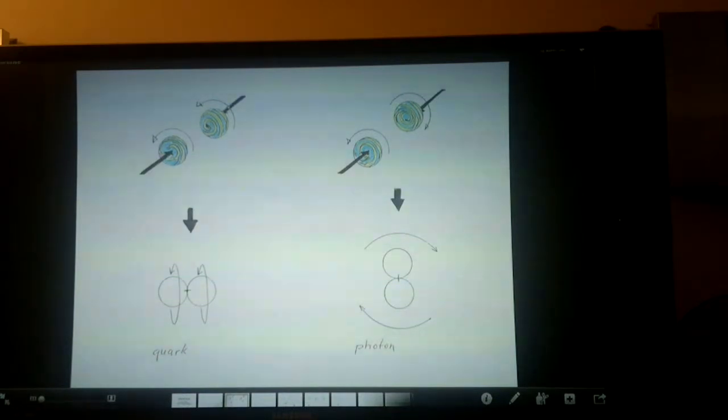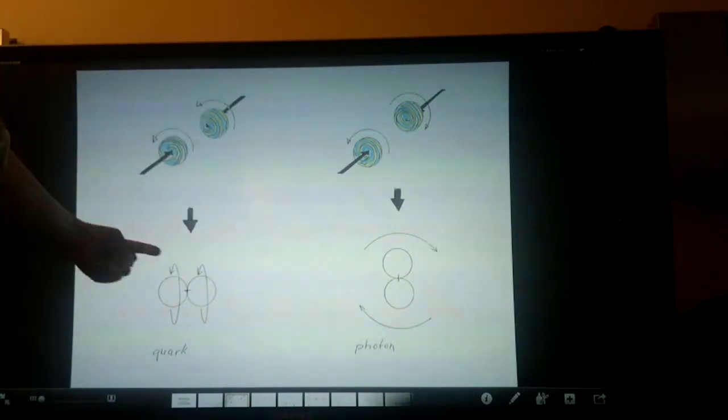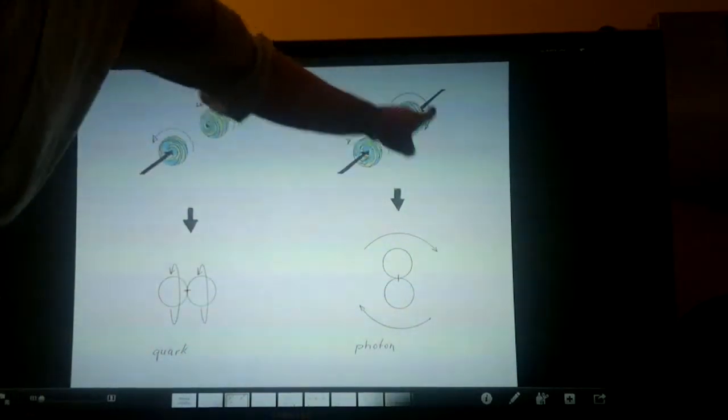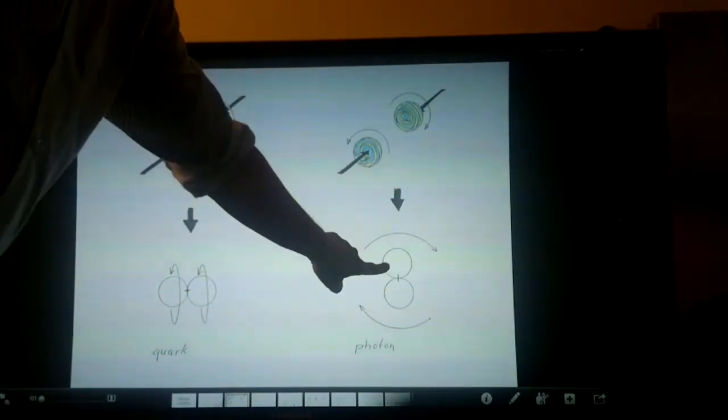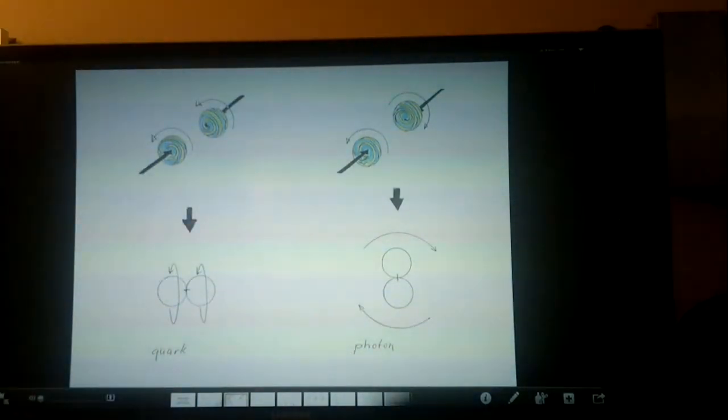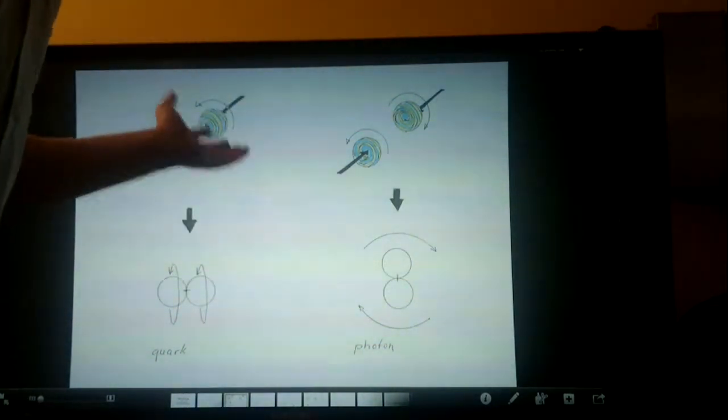You got two of these spring-like objects. When they both turn in this direction and connect, you get a quark moving this way. When one goes that way and one goes the other way and they connect, you get a photon, because then it starts rotating as a whole. So this is not a quark, this is a photon. It's the same object, only it moves differently.